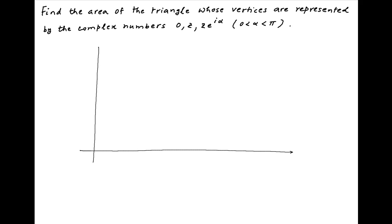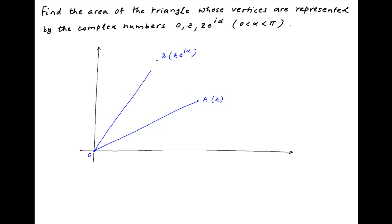Let's start by plotting the given triangle on the Argand plane. We have the origin at the point O and the point A represented by the complex number Z. Point B also lies on the Argand plane and is represented by the complex number Z times e raised to the power i alpha. Now we complete the triangle by joining OA, OB and AB.